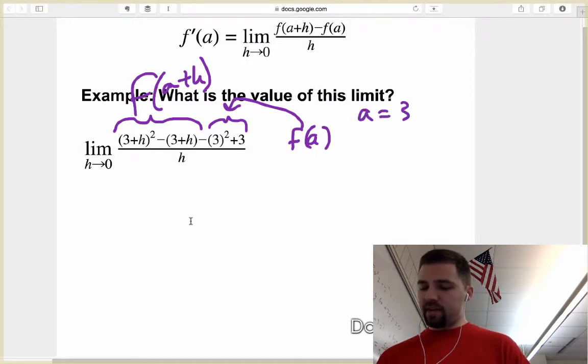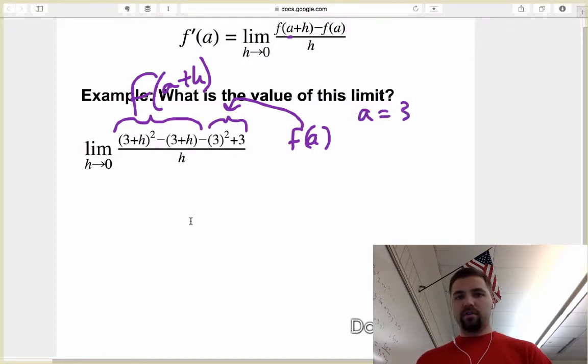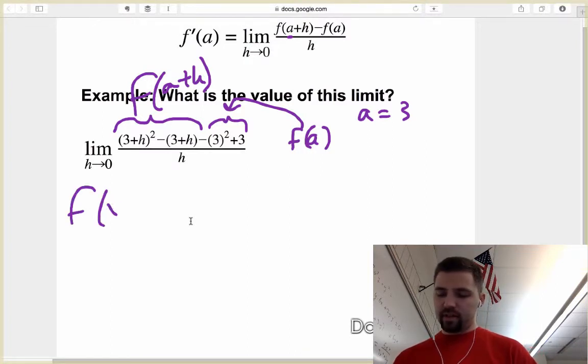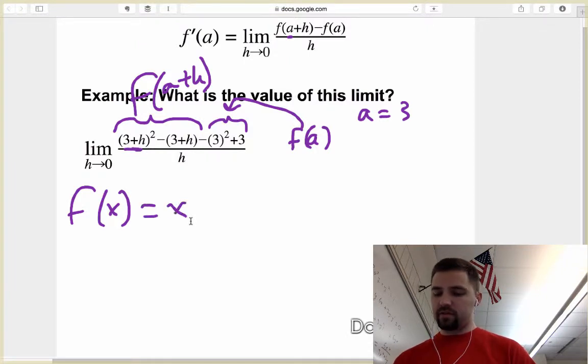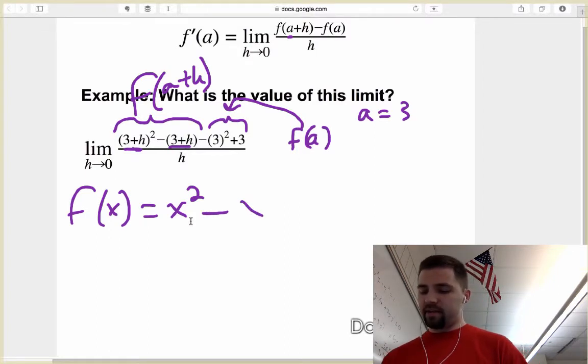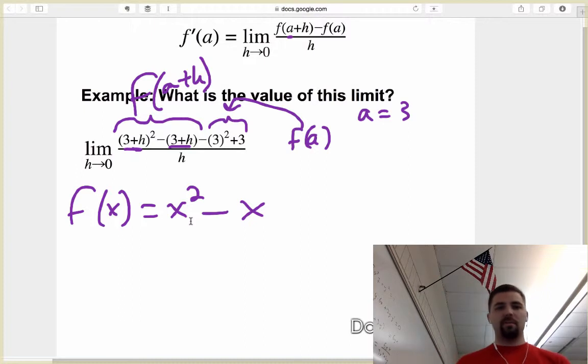It also means that my function f of x has to look something like this. It has to have something squared, or x squared, in other words. And then it also has to have, because we've got another 3 plus h here, it also has to have minus x. So our function must be x squared minus x.